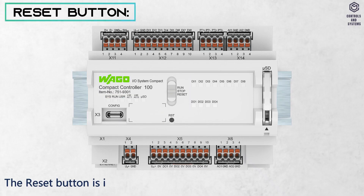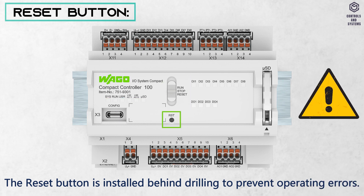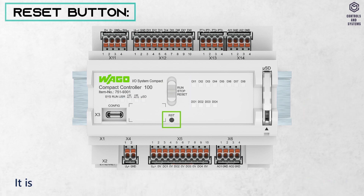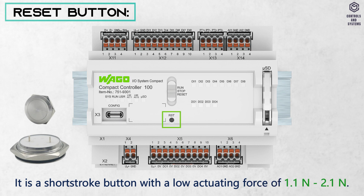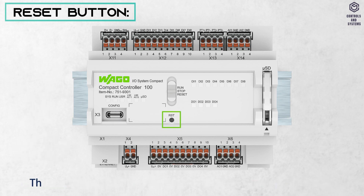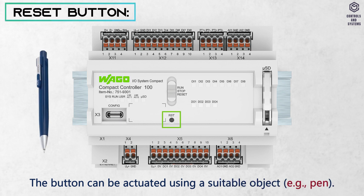Reset button: The reset button is installed behind a drilling to prevent operating errors. It is a short stroke button with a low actuating force of 1.1 N to 2.1 N. The button can be actuated using a suitable object, for example a pen.